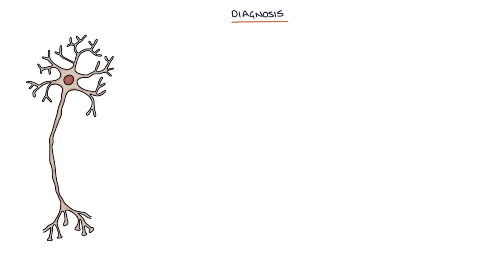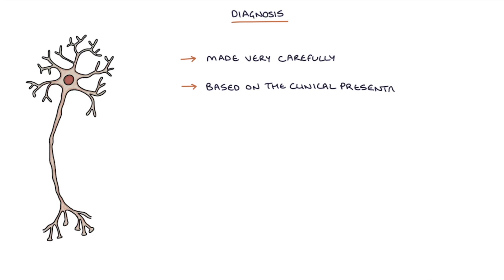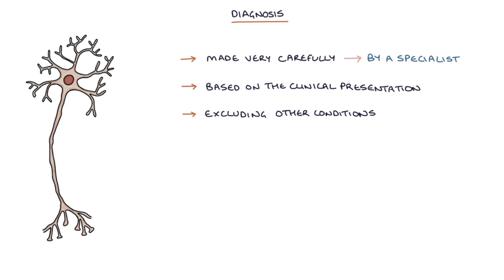The diagnosis of motor neuron disease needs to be made very carefully. It is based on the clinical presentation after excluding other conditions, and should only be made by a specialist when there is certainty. The diagnosis is often delayed, which causes stress.